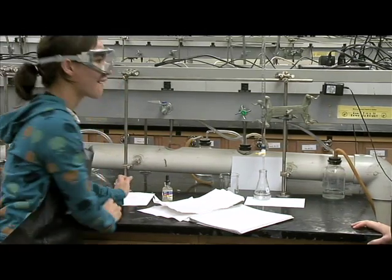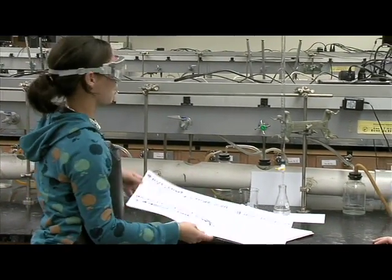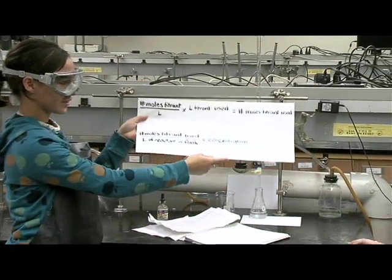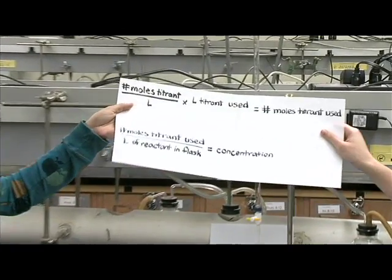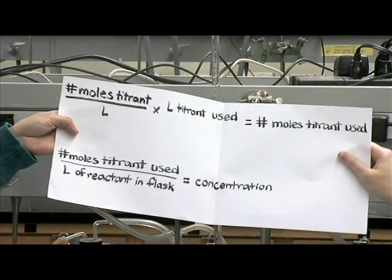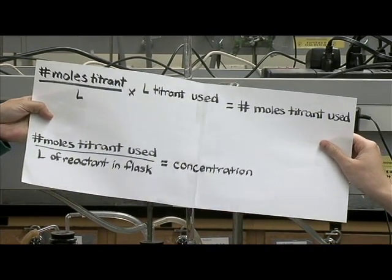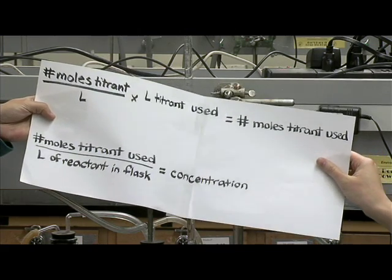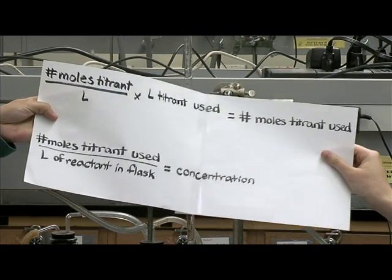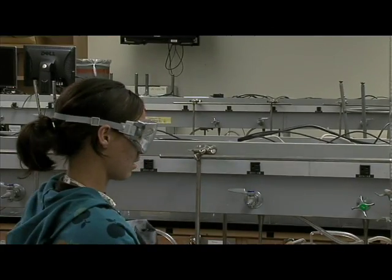Alright, now, with that, we can find the concentration of the titrant. Oh, and the number of moles that we used. Okay, so we know that we have 5.0 milliliters of reactant in the flask. So, using the reaction equation, we can find the number of moles we have and then divide it by the total volume to find the concentration. Wow, I'm impressed.